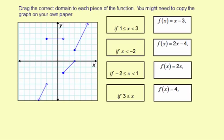Let's look at this first one. f of x equals x minus 3. So it has a slope of 1 and a y-intercept of negative 3. So let me see if I can find a slope of 1 somewhere. It looks like this guy right here.